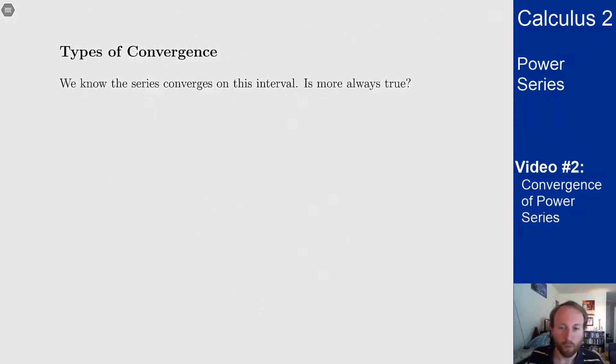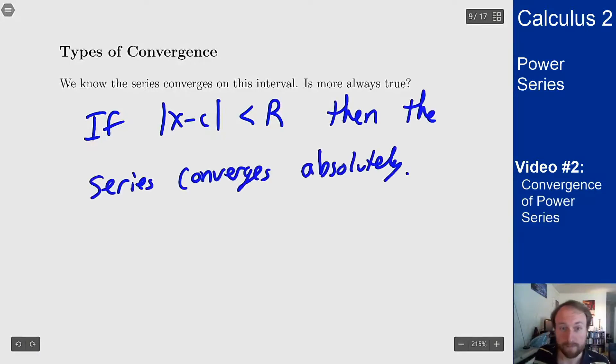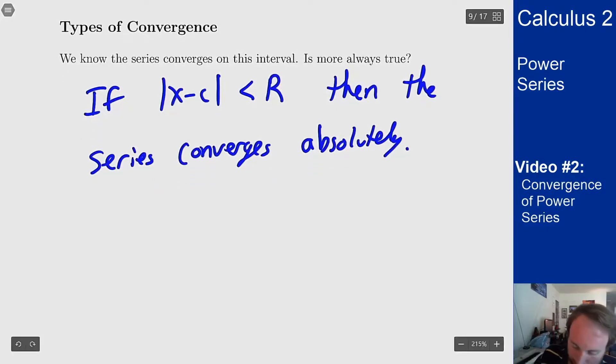So we know this series converges on this interval. What else do we know? Well if x is strictly inside the interval, that is if |x minus c| is strictly less than r, this is impossible if r is zero and always happens if r is infinite but that's okay, then the series converges absolutely. Outside the interval we know it diverges. So if |x minus c| is bigger than r we know we have the series diverges.